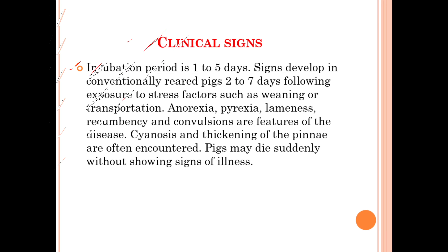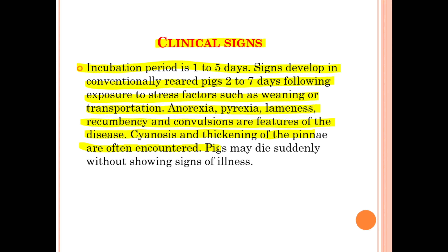The clinical signs of Glässer's disease: the incubation period is one to five days. Signs develop in conventionally reared pigs two to seven days following exposure to stress factors such as weaning or transportation. Anorexia, pyrexia, lameness, recumbency, and convulsions are features of the disease. Cyanosis and thickening of the pinna are often encountered.